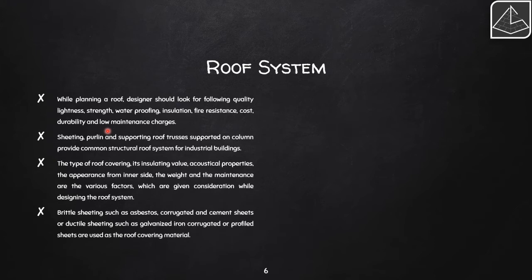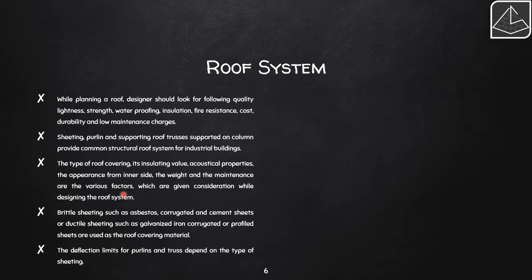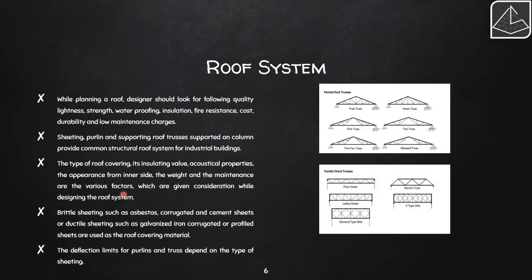Brittle sheeting like asbestos corrugated and cement sheets, or ductile sheeting like galvanized iron corrugated or profile sheets, are used as roof covering materials. Corrugated cement or asbestos sheets are preferred for regular roofing. The deflection limits for purlins and trusses depend on the type of sheeting, as loads are transferred from sheets to purlins and ultimately to the truss — making this a critical part of structural design.